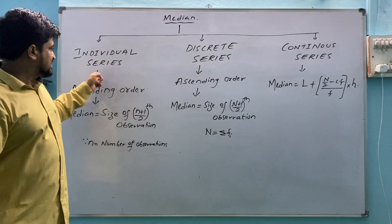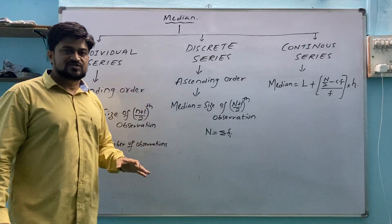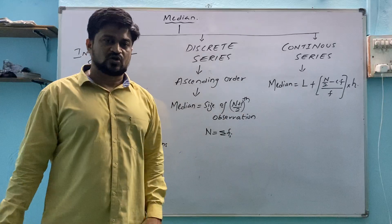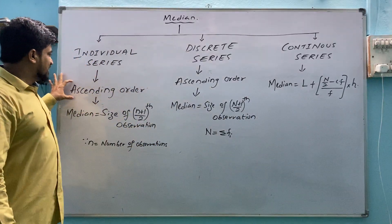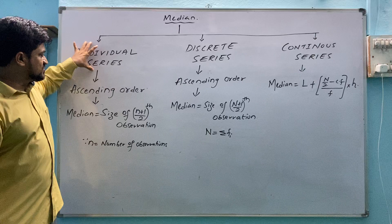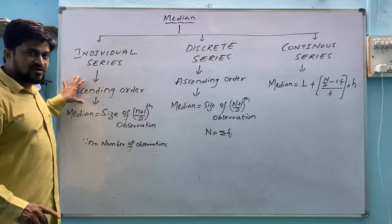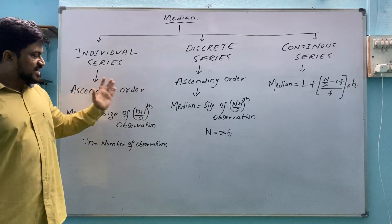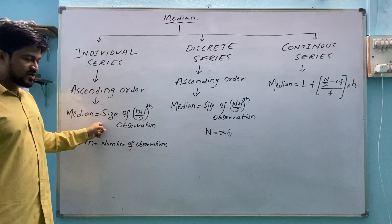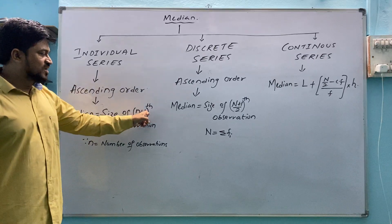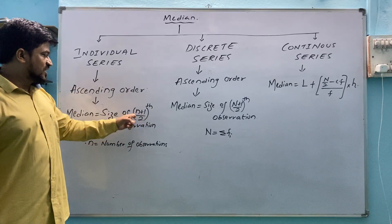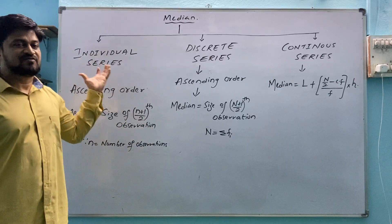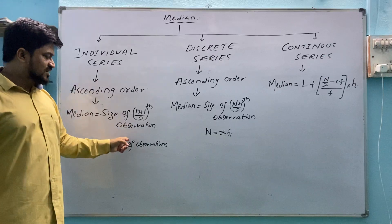In individual series, the first thing to remember is ascending order. Whatever values are given, we must write them in ascending order. After that, we apply the formula: median equals size of (n+1)/2 observation, where small n is the number of observations. For example, if there are 7 values, n equals 7.